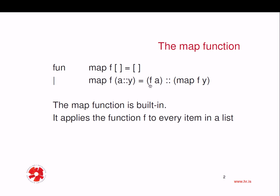What do we return in that case? We construct a list by using the cons operator. Double-colon is the cons operator in Standard ML. We first apply the function to the head of the list — f of a gives us the result. And we cons that to the result of applying map again to the same function f and the tail, effectively applying the function to every item in the list.